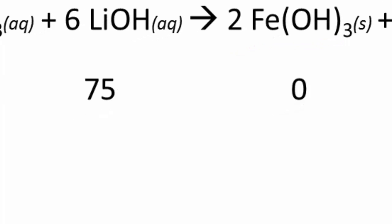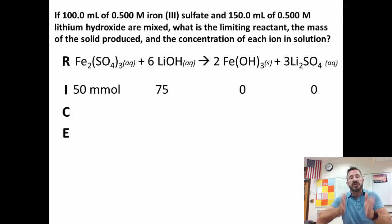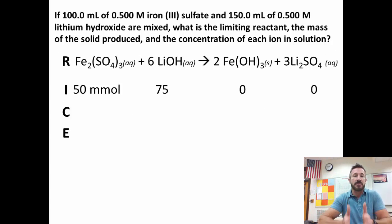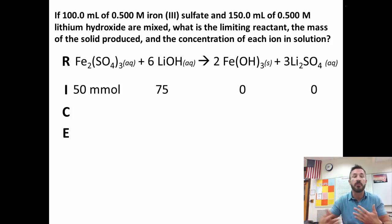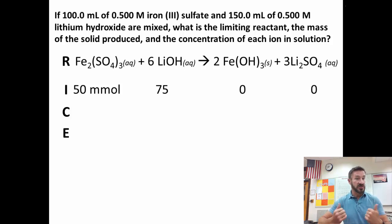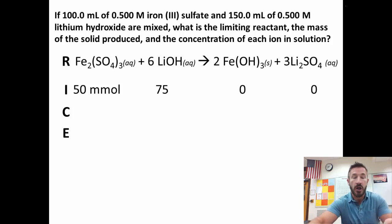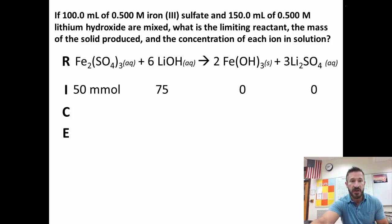Next, we find the limiting reactant. An easy approach is to convert both reactants to the same substance for comparison. I suggest converting both to the solid product — iron(III) hydroxide — since you've already done a necessary conversion. So we're going to change both reactants to iron(III) hydroxide.